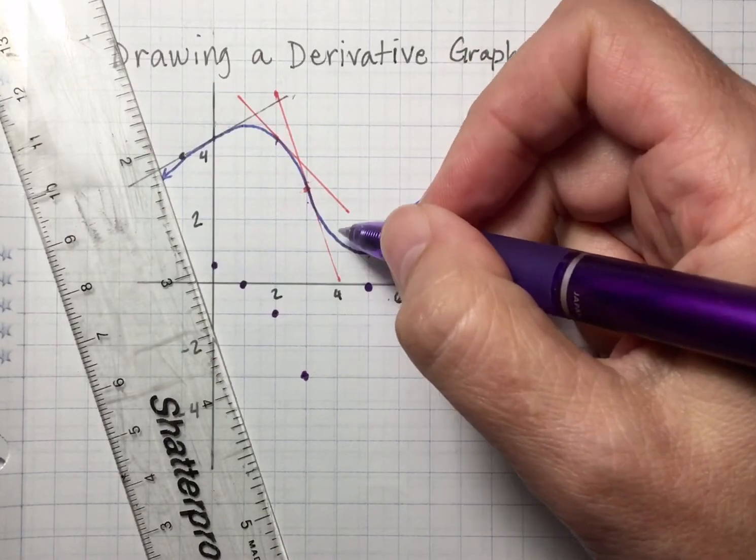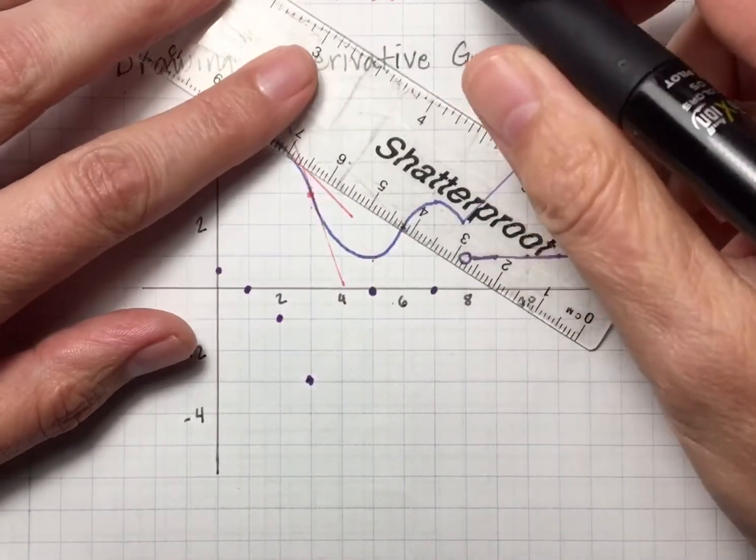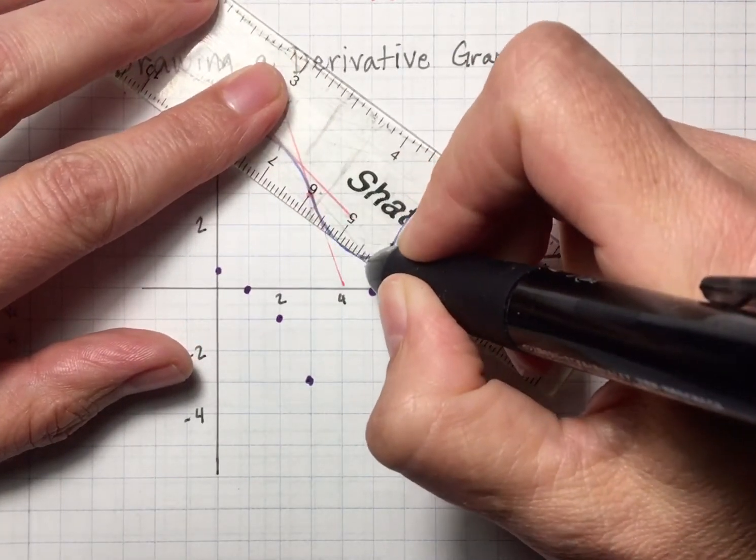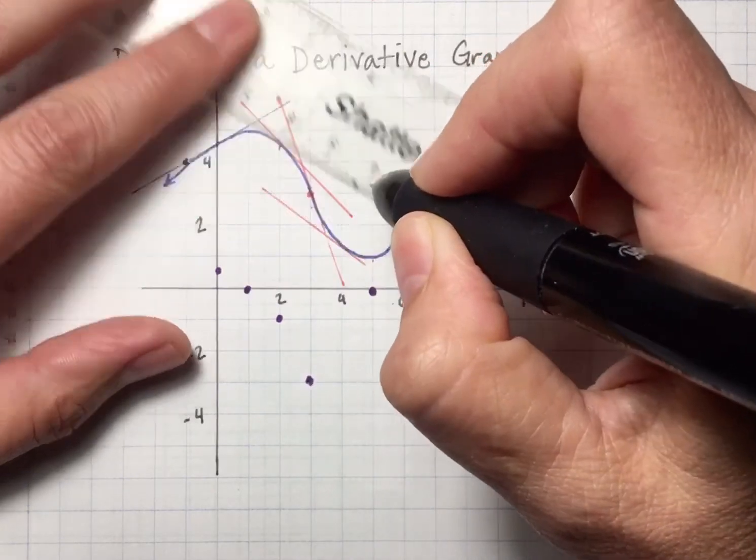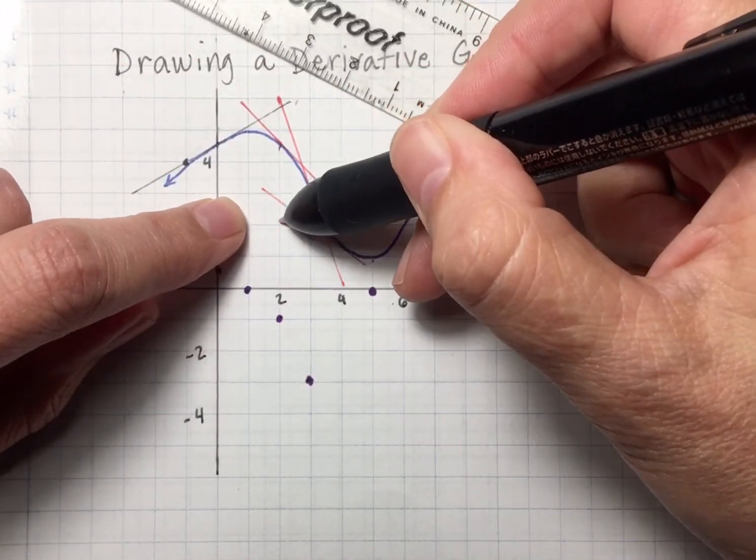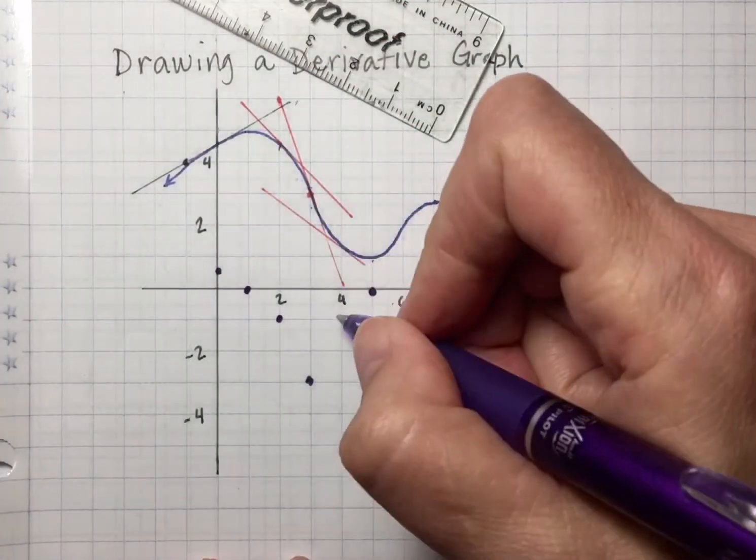Then as I get towards x equals 4, I could draw another tangent line. This time I'll be coming from the top, but I kind of squeeze that out, draw my line. So when x is 4, my slope is about negative three-fourths-ish. I can plot that.